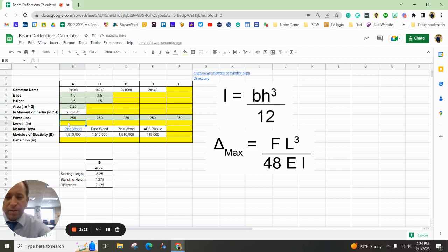And then the length on the board that's behind me is 8 feet long. We want to convert that to inches. So I'm going to hit equals 12 times 8.